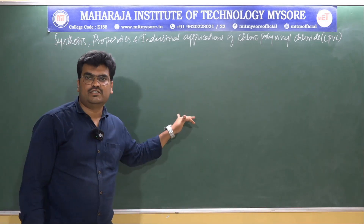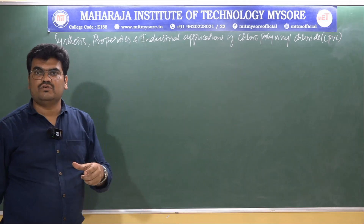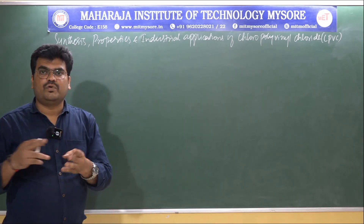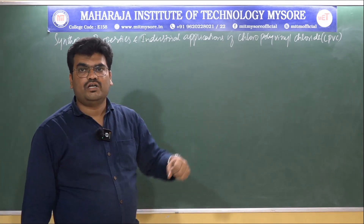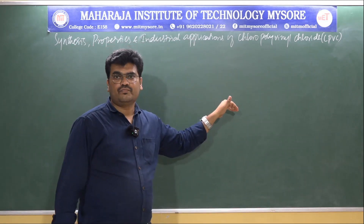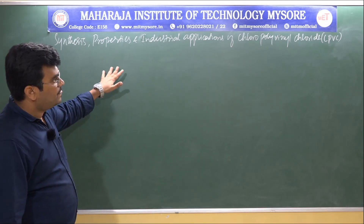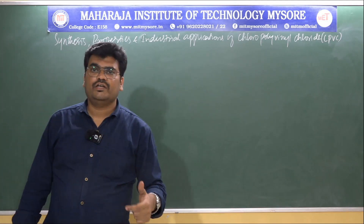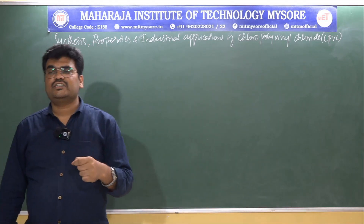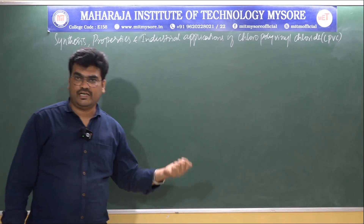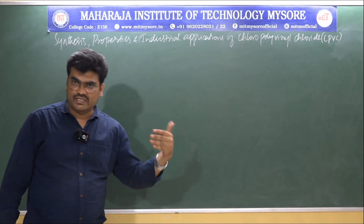Before going to study CPVC, let us first understand polyvinyl chloride. Polyvinyl chloride is the third most widely used polymer in the market after polyethylene and polypropylene. It is prepared by the addition polymerization of vinyl chloride using a free radical mechanism. From this PVC, one can prepare chlorinated polyvinyl chloride, which is PVC that has been chlorinated via a free radical chlorination reaction.